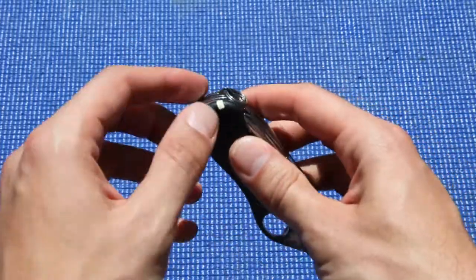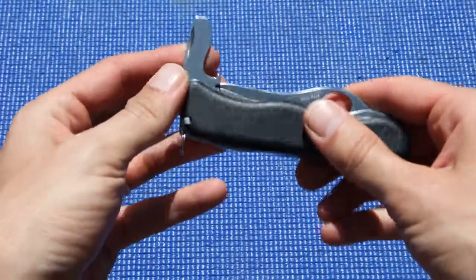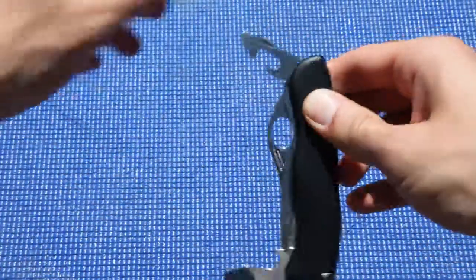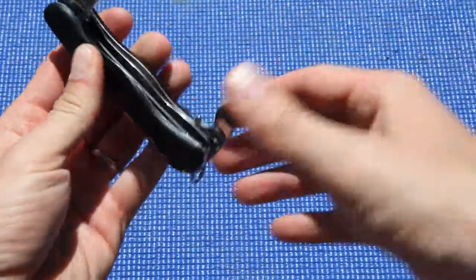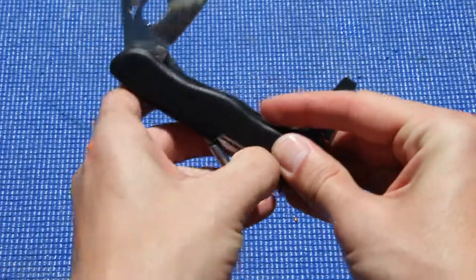It has the typical toothpick and tweezers that are common on Swiss Army knives. A little screwdriver. It has a bottle opener. You've got the serrated blade. Got another screwdriver back here.